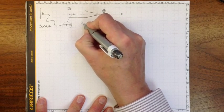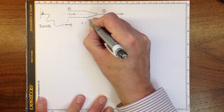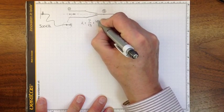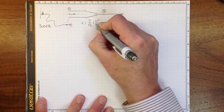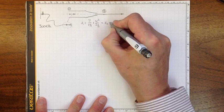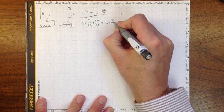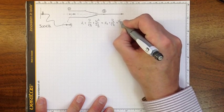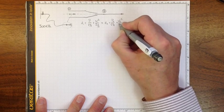Z1 plus P1 over rho g plus V1 squared over 2g must be equal to Z2 plus P2 over rho g plus V2 squared over 2g.